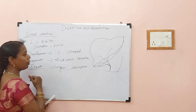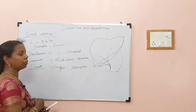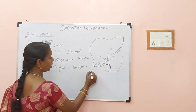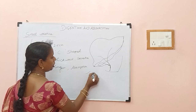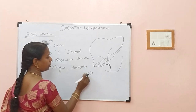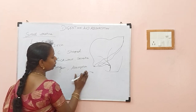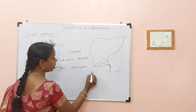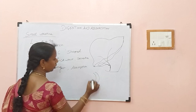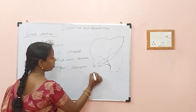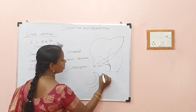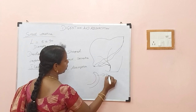So, we will first study the duodenum in detail. As you can see, after the pyloric sphincter — you remember we discussed the pyloric sphincter — there will be a C-shaped organ. This is the pyloric sphincter, and this is our duodenum.